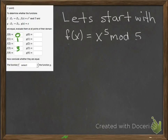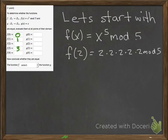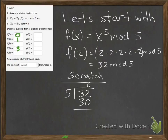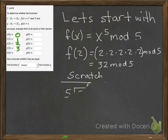We forgot 2, so we're going to evaluate f of 2. f of 2 is 2 to the fifth mod 5, which is 32 mod 5. Our scratch work: 5 goes into 32 six times with remainder 2. So 32 mod 5 equals 2. We write that in.